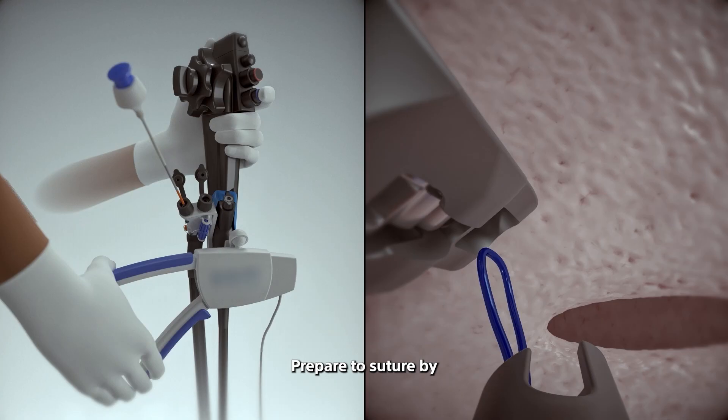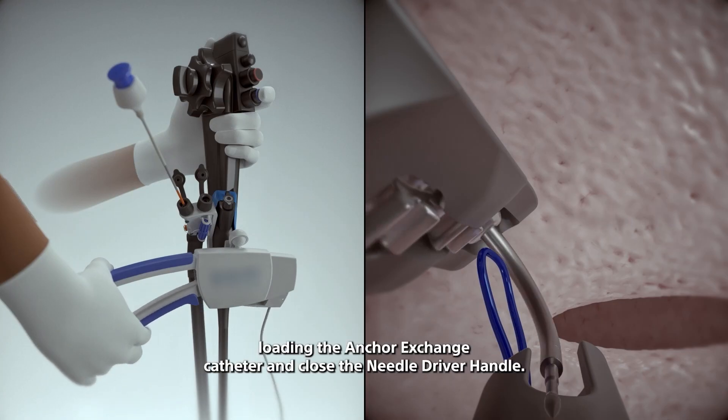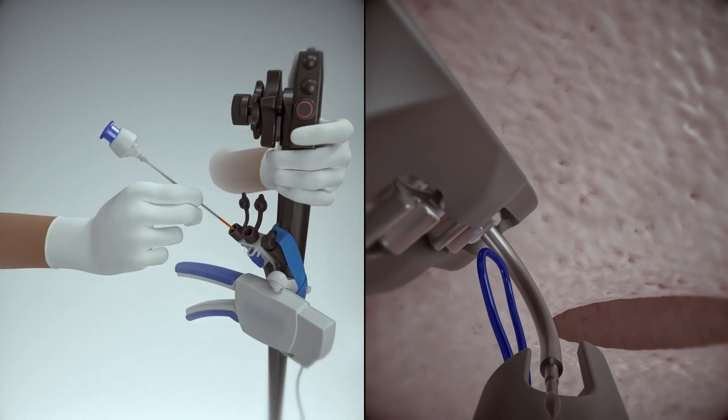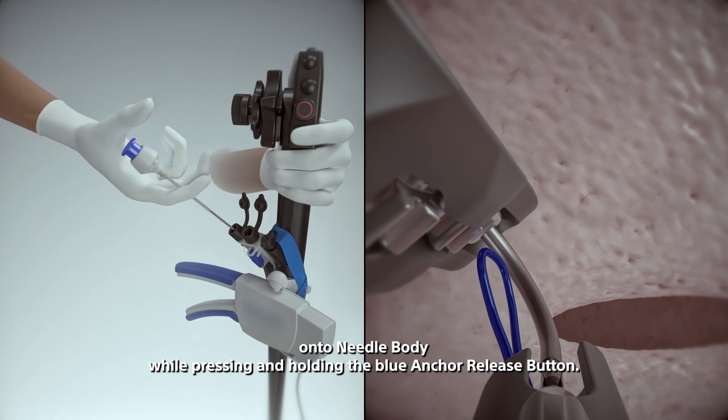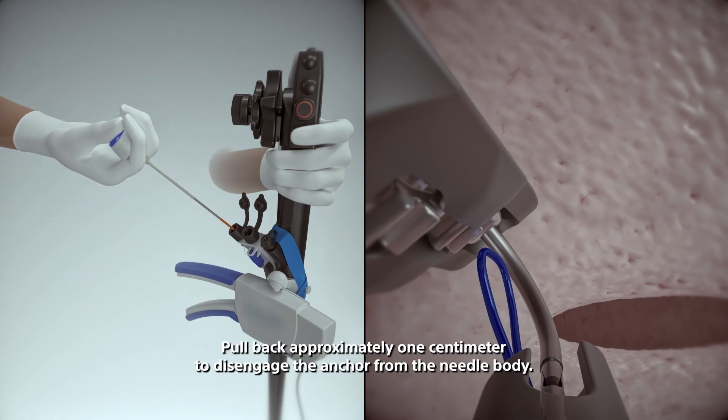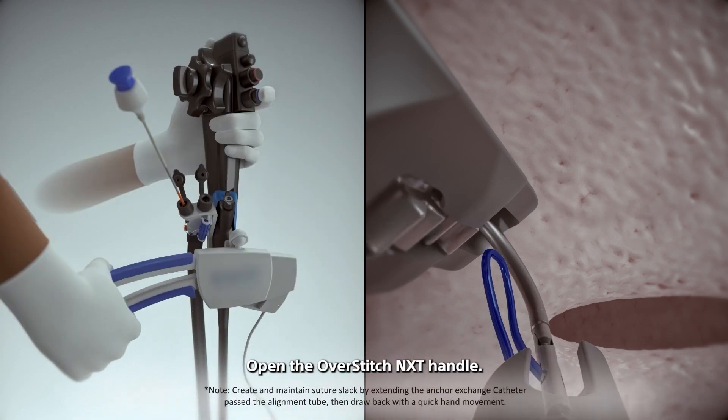Prepare to suture by loading the anchor exchange catheter and close the needle driver handle. Using a pencil grip on the white portion of the cable, advance the anchor exchange until anchor fully seats onto needle body. While pressing and holding the blue anchor release button, pull back approximately one centimeter to disengage the anchor from the needle body. Open the overstitch NXT handle.